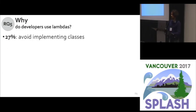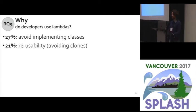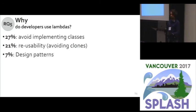27% of the time, developers said they don't want to create new classes just for simple things — classes carry semantic weight, so they use lambda expressions instead. 21% said they wanted to reuse code and parameterize behavior, so they created a lambda expression. 7% said they are implementing design patterns using lambda expressions, because lambda expressions can let you avoid creating inheritance hierarchies in your code — developers actively said they preferred lambdas over building inheritance hierarchies.